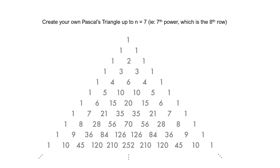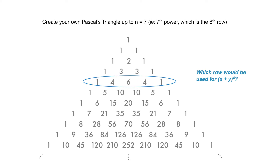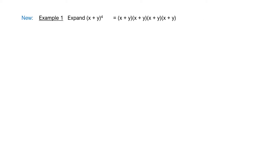Here is the correct triangle, going up to n equals 10, so we have more than what we need. Our original example is just (x + y) to the power of 4. The row we need is the one with the 4s in it. Let's go back to our first example — we had expanded it all out, but we're not going to expand that way anymore. Power of 4 or higher, we use our new strategy.